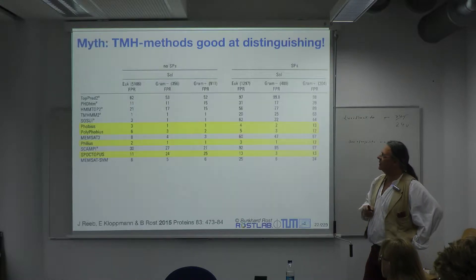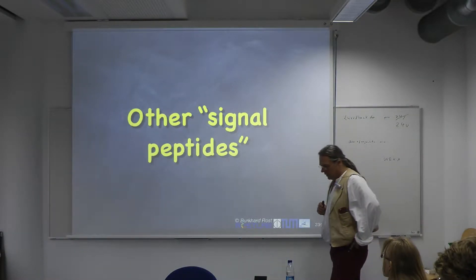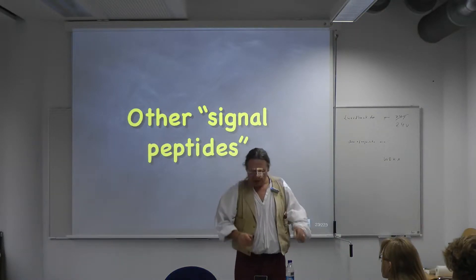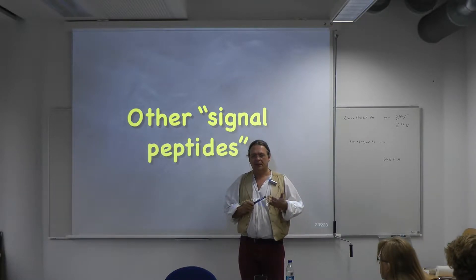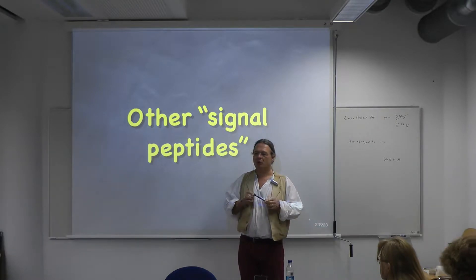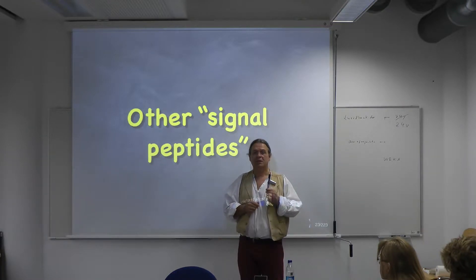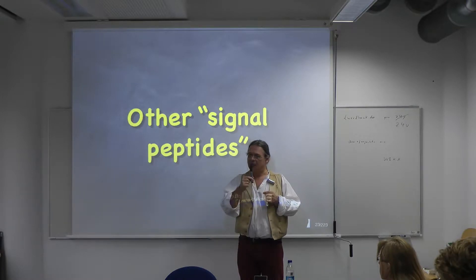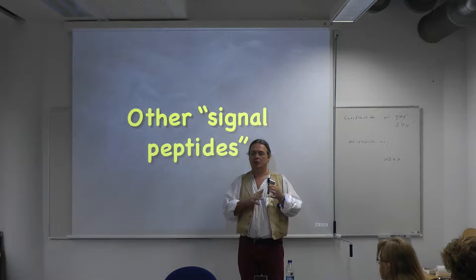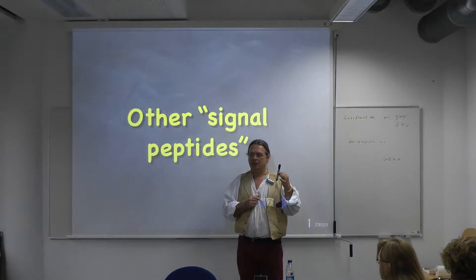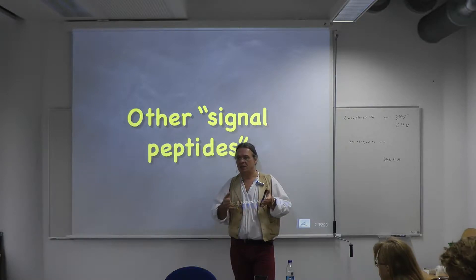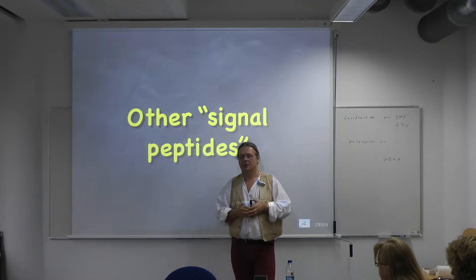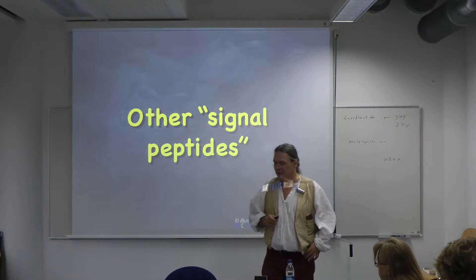The low-error methods — Phobius, Polyphobius, Phileus — are the next generation. They acknowledge the problem: hydrophobicity may confuse their prediction method, so they use SignalP input to consider the signal peptide simultaneously. That is the best we can do, and still there is some error. There is an additional complication: for some proteins, the signal peptide or part of it is inserted as a membrane helix and stays that way — not cleaved off. This is the ultimate problem for distinguishing the two: you have something that looks like a membrane helix and is a membrane helix.